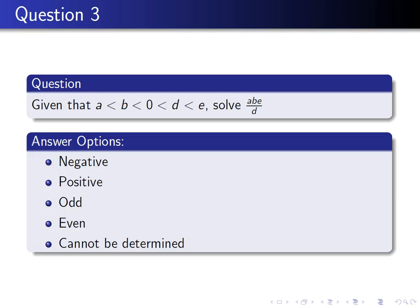Finally, question 3. Given that A is less than B and B is less than 0, and given that D is bigger than 0 and E is bigger than D, solve A times B times E divided by D.